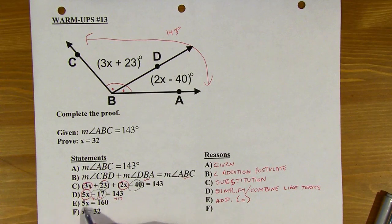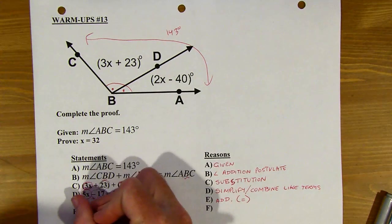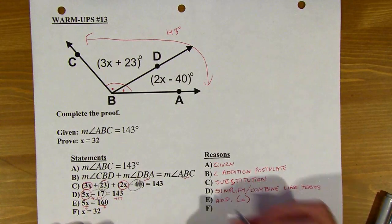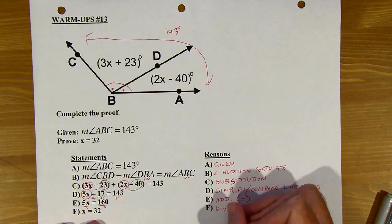And then the last step, the five disappeared, and then we've got a different number there. Well, if you divide both sides by five, that will get you to step F. So this is the division property of equality. Okay?